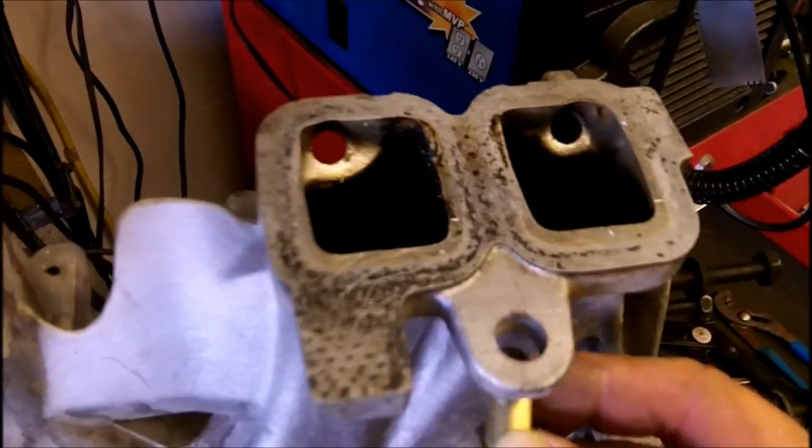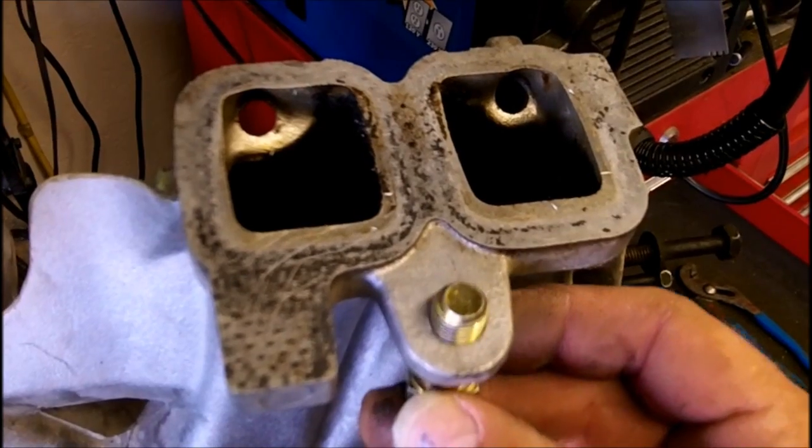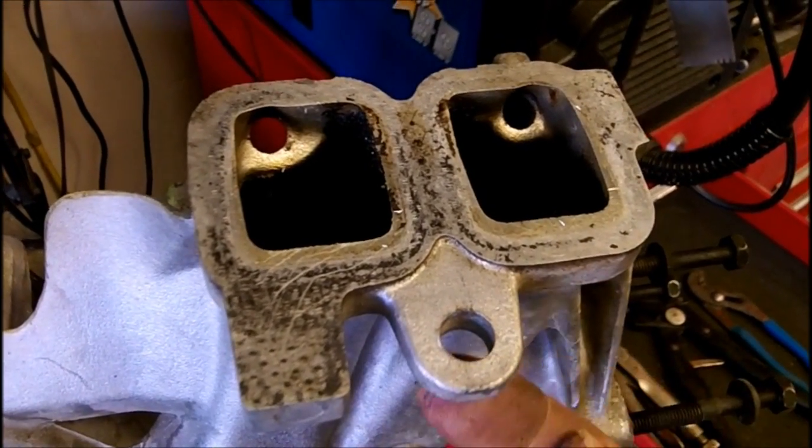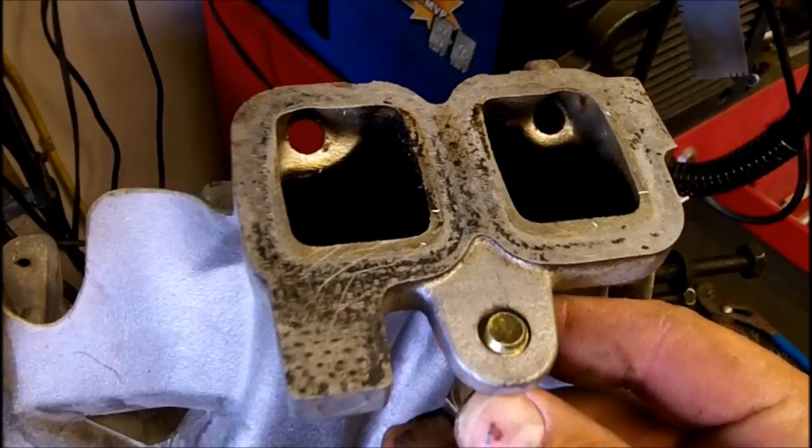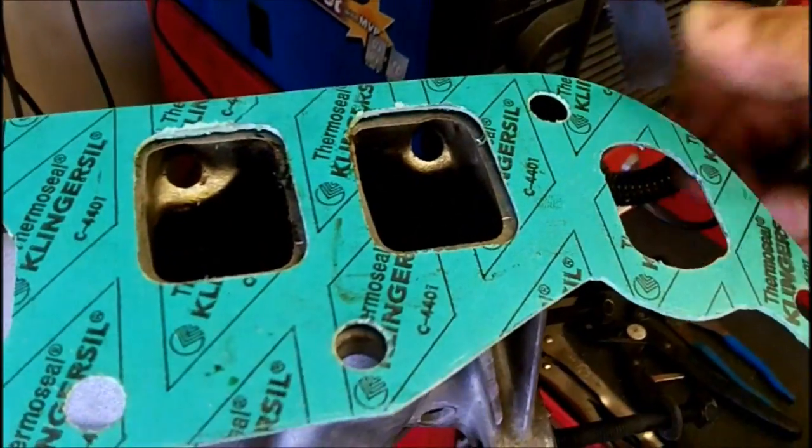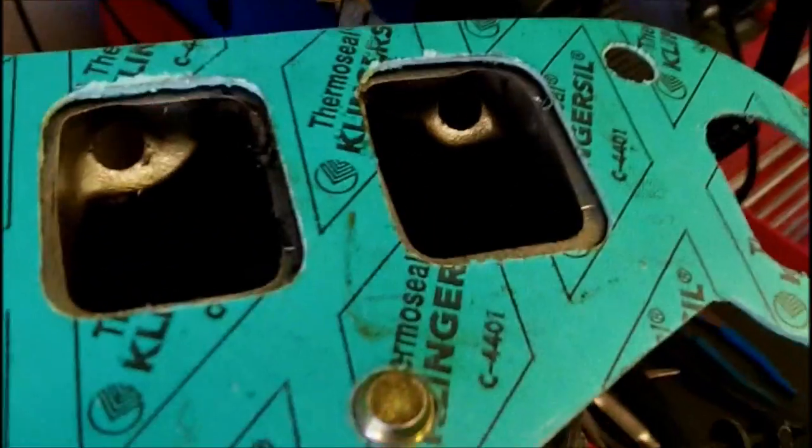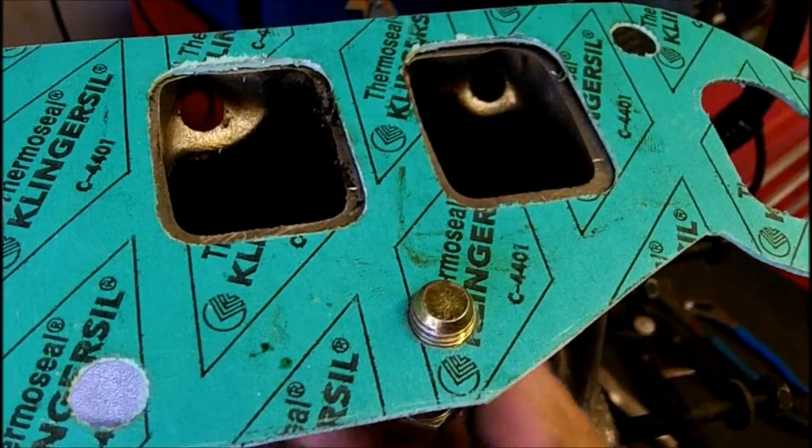What I've got here is a bolt that just fits in that alignment stud that you're going to have on your cylinder head. By using that, put your gasket up here, and it threads into there and holds it.